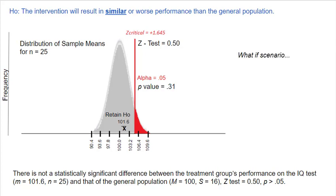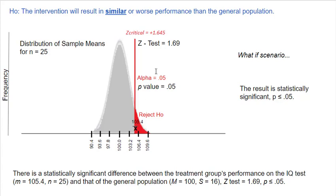Now let's consider some other scenarios. What if our sample mean had been 101.6? For 101.6, the Z test would work out to be 0.5, saying our sample mean is half a standard error above the null-expected value. The p-value would be 0.31 — not unusual — so we'd retain the null. What if our sample mean was 105.4? We'd get a Z test of 1.69, which meets or exceeds the Z critical, and a p-value of 0.05 — so we'd reject the null.